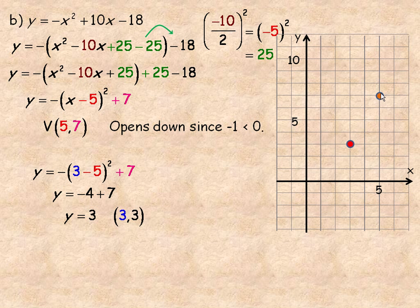Now remember, this is the vertex, and the parabola is symmetrical. So if (3, 3) is on the graph, then this point over here would be as well, which of course is (7, 3). And then we can draw our parabola through them. It looks something like that.